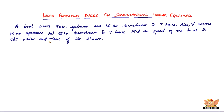In this video, let us continue to solve word problems based on simultaneous linear equations. We've got a problem about a boat. The boat travels 32 kilometers upstream and 36 kilometers downstream in 7 hours. It also covers 40 kilometers upstream and 48 kilometers downstream in 9 hours. Find the speed of the boat in still water and that of the stream.